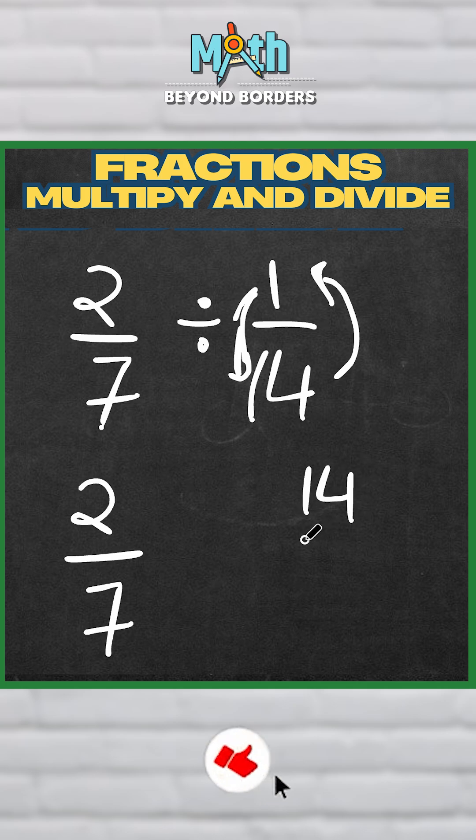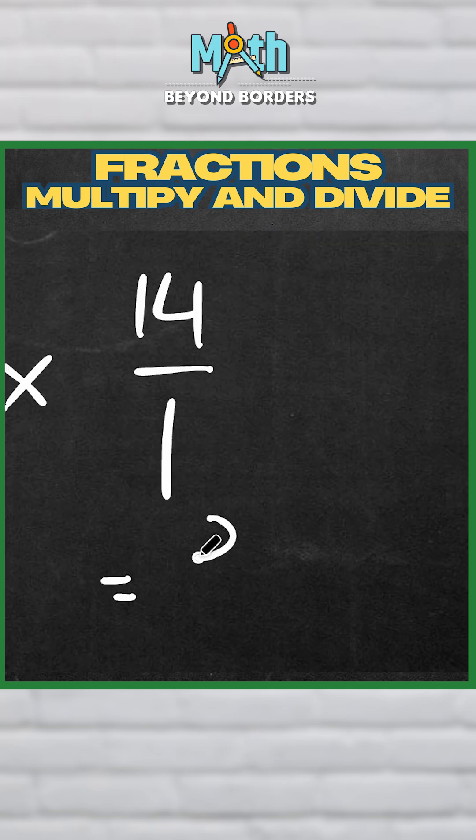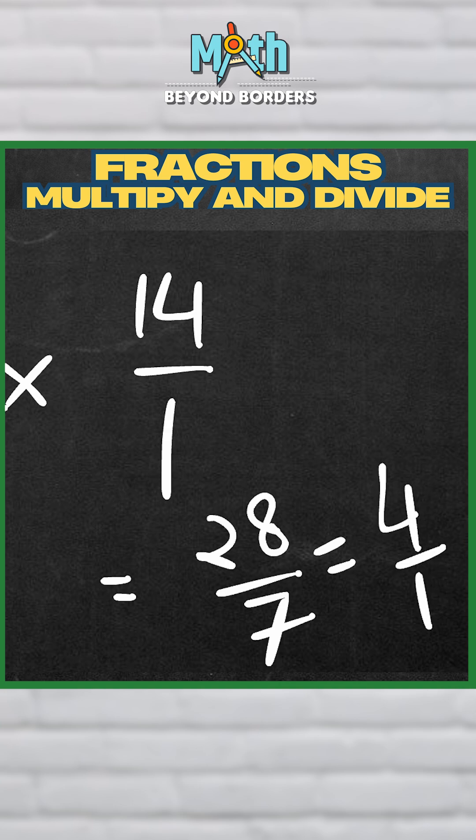And the sign changes to multiply. That's it, and then you can solve it. So 2 times 14 is 28 over 7, and if you follow the simplification process, your answer should be 4 over 1, or just 4.